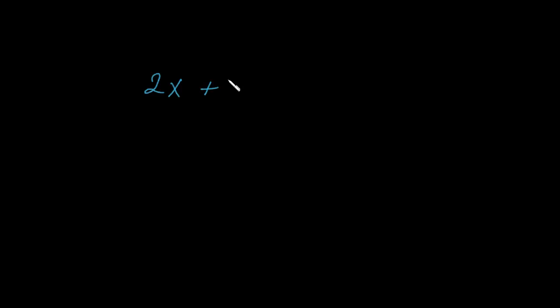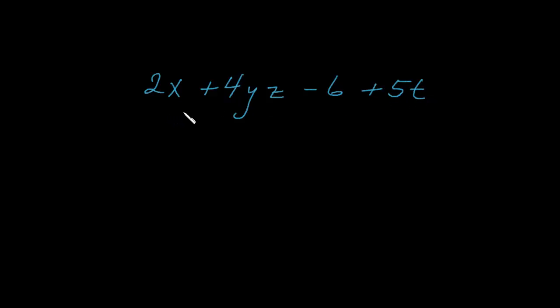Let's take a look at one more expression, and then we'll look at its parts. Let's go with 2x plus 4yz minus 6 plus 5t. We have this algebraic expression — whether it represents something or not isn't what we're focusing on. We just want to look at the names of the various elements of this algebraic expression.